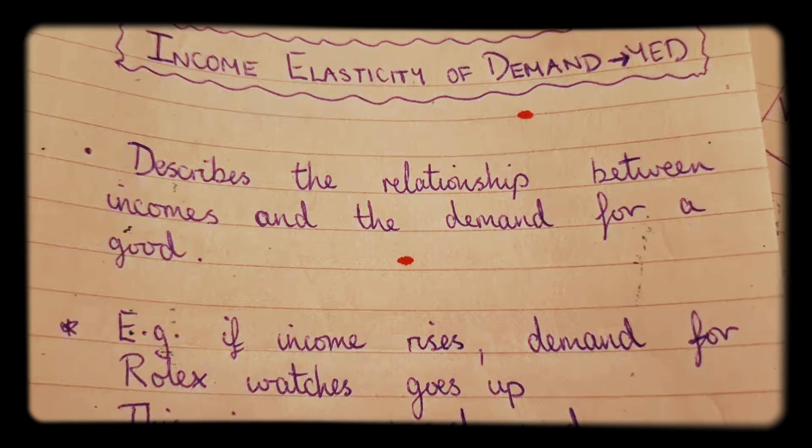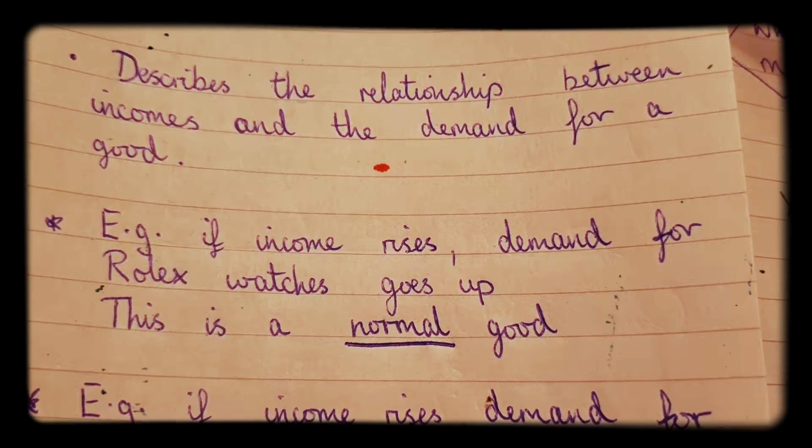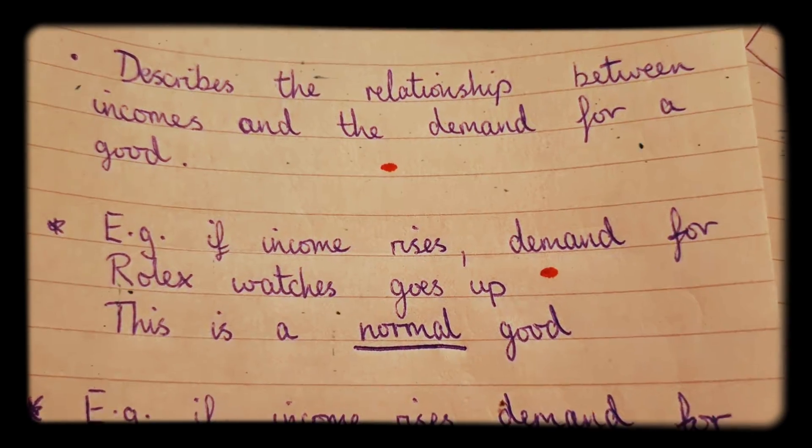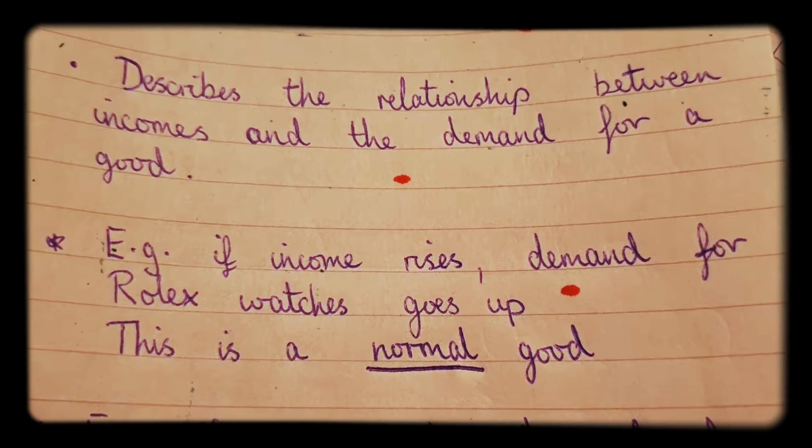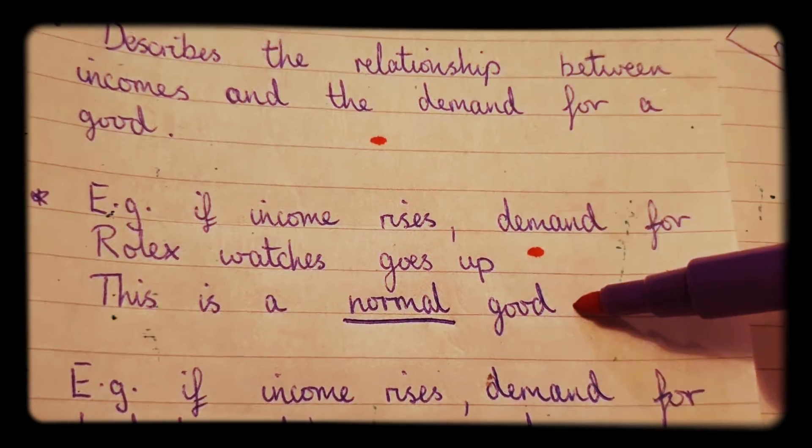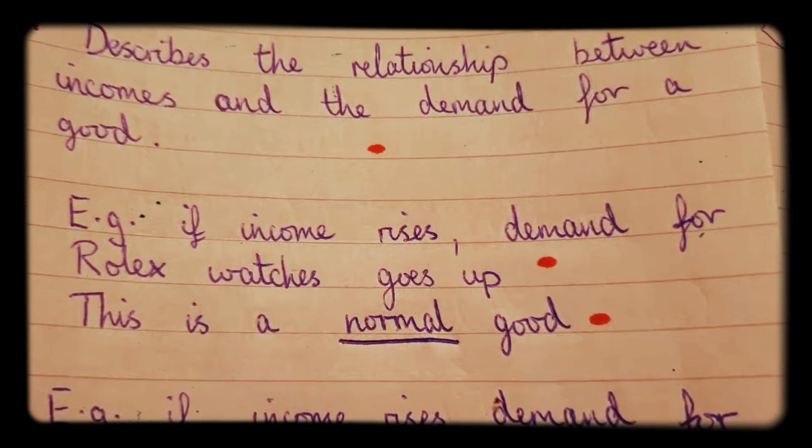For example, if incomes rise then demand for Rolex watches goes up as you would expect, because Rolexes are luxury items. So these are considered normal goods. A Rolex watch is a normal good. If your income goes up you want to buy more of it.